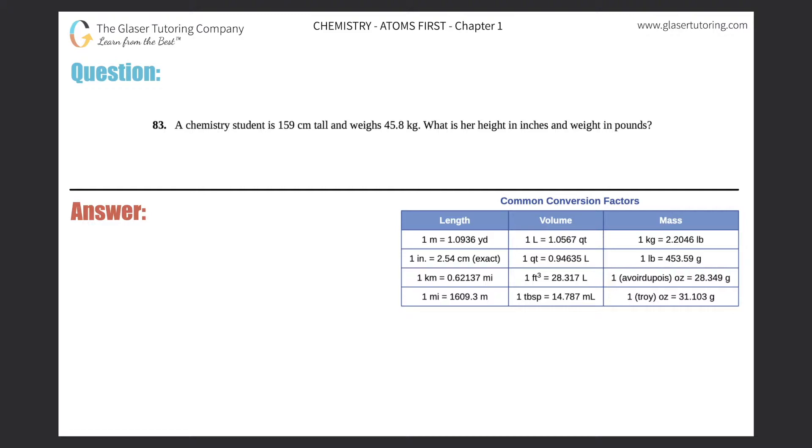Number 83: A chemistry student is 159 centimeters tall and weighs 45.8 kilograms. What is her height in inches and weight in pounds? Okay, so it looks like we just have to convert here. They told us the chemistry student's height was 159 centimeters tall and the weight was 45.8 kilograms.